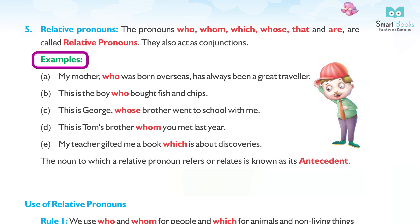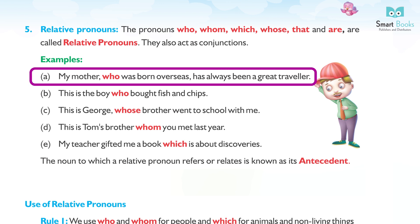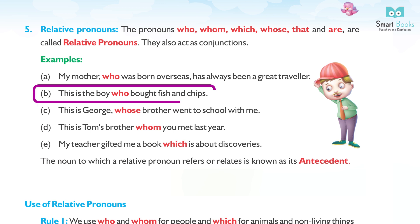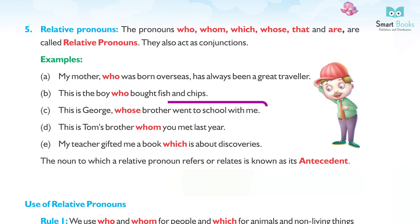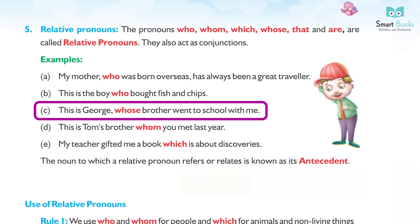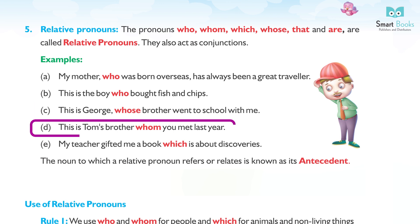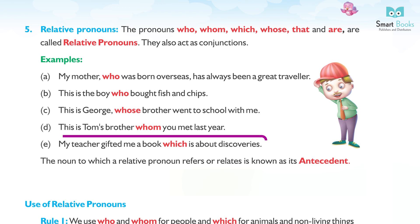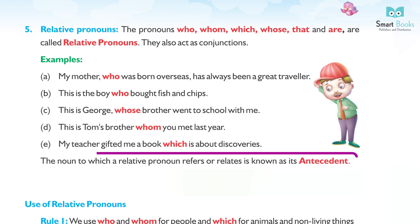Examples of relative pronouns: (a) My mother, who was born overseas, has always been a great traveler. (b) This is the boy who bought fish and chips. (c) This is George, whose brother went to school with me. (d) This is Tom's brother whom you met last year.